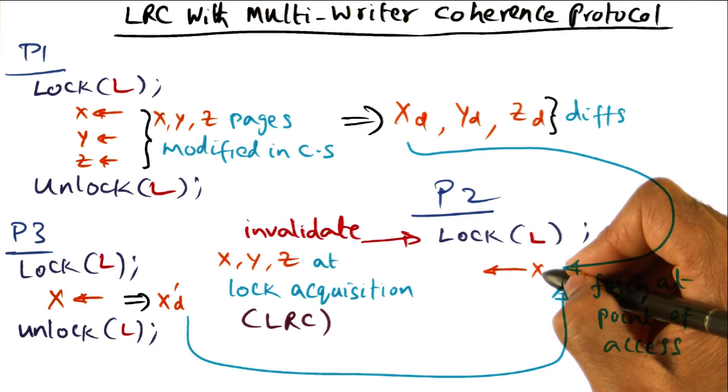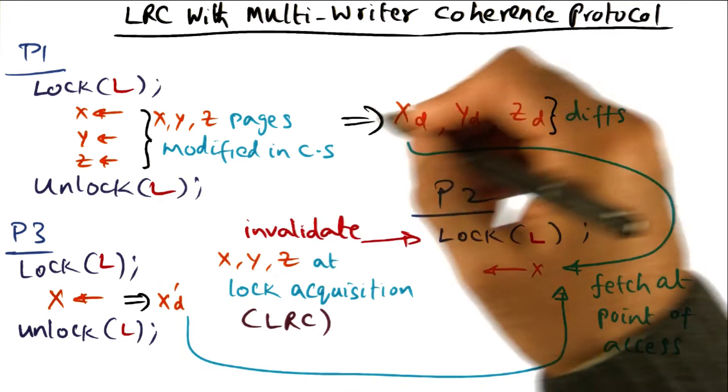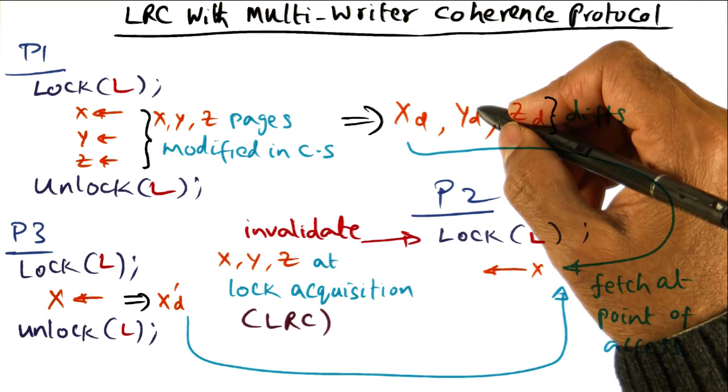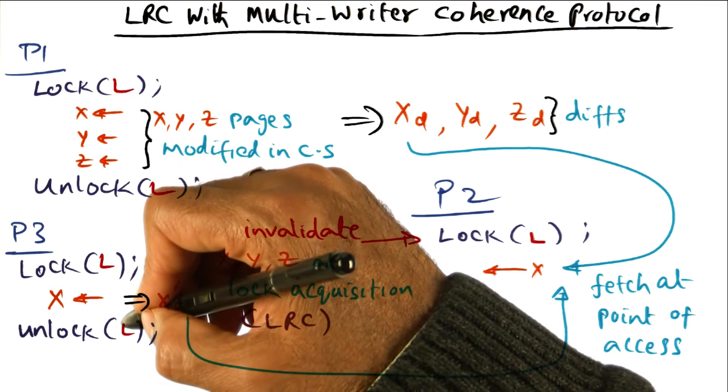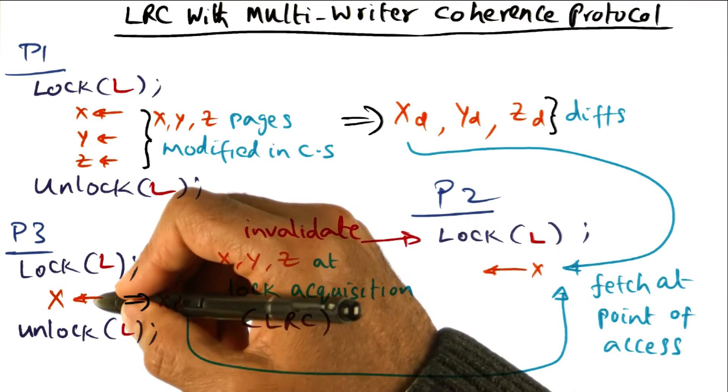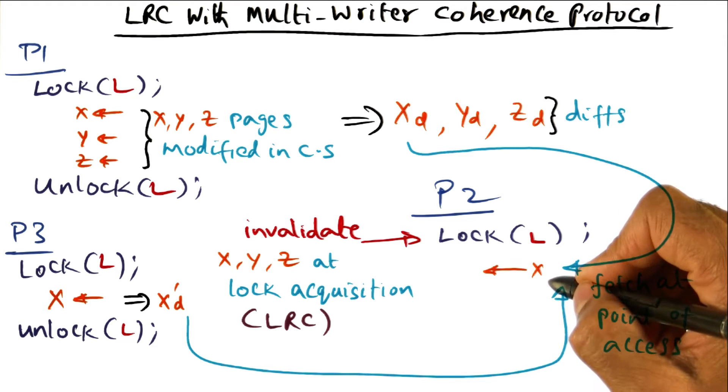And you can extend this to any number of processors that may have made modifications, their own modifications to this page under the provision of this lock L. All of those diffs are going to be applied in order for the processor P2 to access the page as the current page.